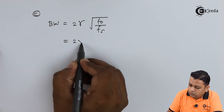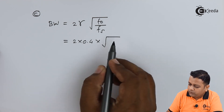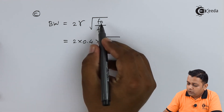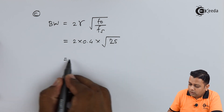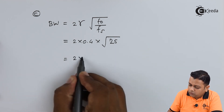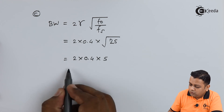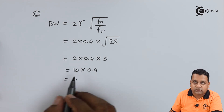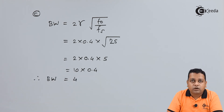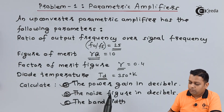Substituting these values: BW = 2 × 0.4 × √25 = 2 × 0.4 × 5 = 10 × 0.4 = 4. So the bandwidth for the parametric amplifier is obtained to be 4. This completes the computation of power gain, noise figure, and bandwidth for the upconverter type of parametric amplifier.